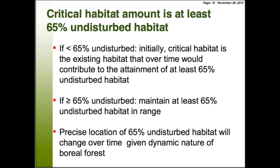If we have a range where there's less than 65% undisturbed habitat, the critical habitat is existing habitat that would over time contribute to attaining at least 65% undisturbed habitat. If we already have 65% or more undisturbed habitat, we want to maintain at least that level. We're also acknowledging that the precise location of this 65% undisturbed habitat will change over time given the dynamic nature of boreal forests — areas that are good habitat now may be bad habitat in the future, and habitat that isn't used by caribou now can come online as forests mature.